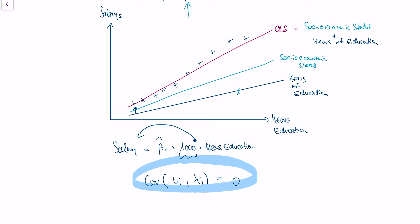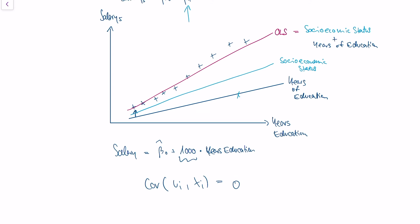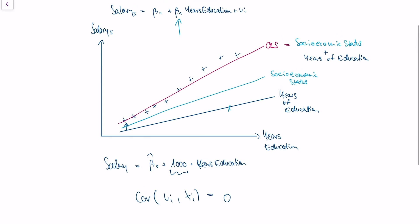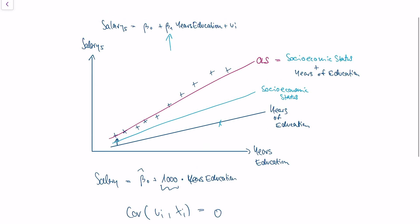And this is why this assumption is so crucial, that we don't have a correlation between our regressor and the error term in real life. Because if we have, then there's likely going to be another variable which influences our outcome. In this case, our estimation by OLS will be wrong.